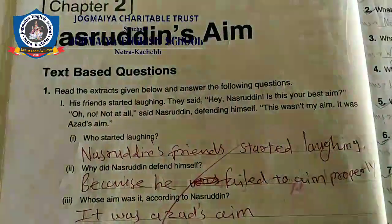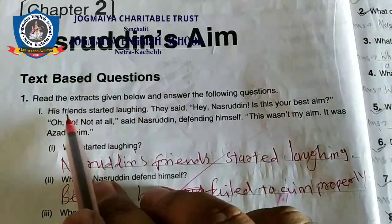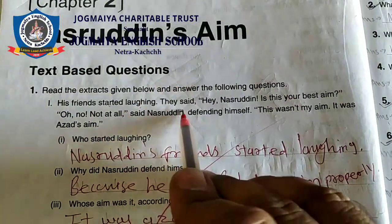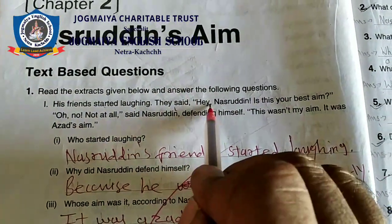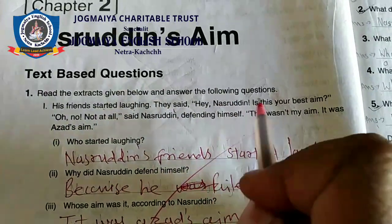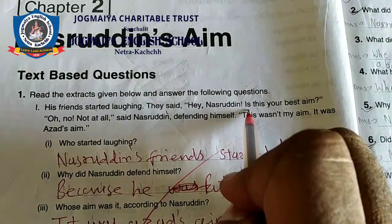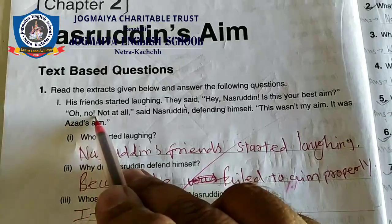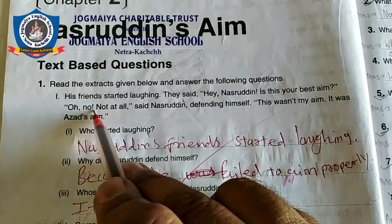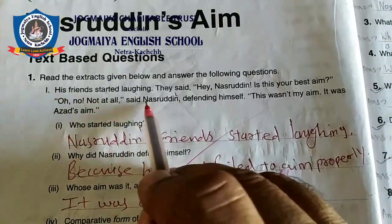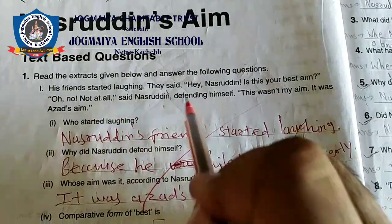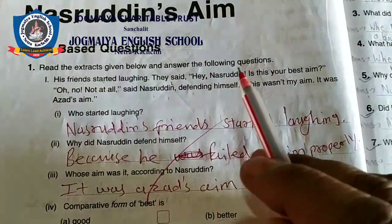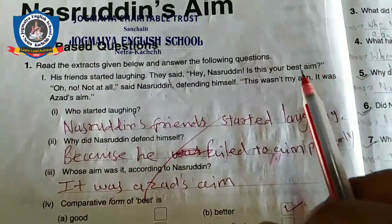His friends started laughing. They said, 'Hey Nasruddin, is this your best aim?' 'Oh no, not at all,' said Nasruddin, defending himself. 'This wasn't my aim — it was Azad's aim.'